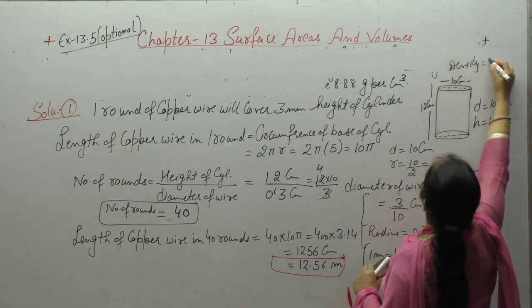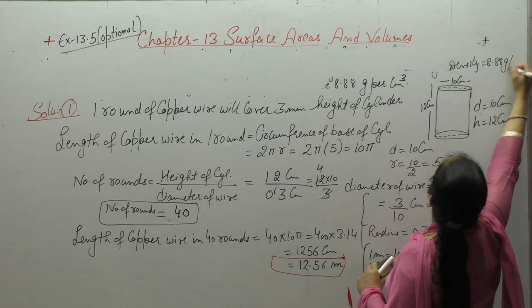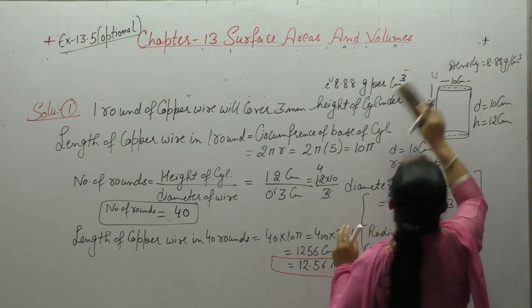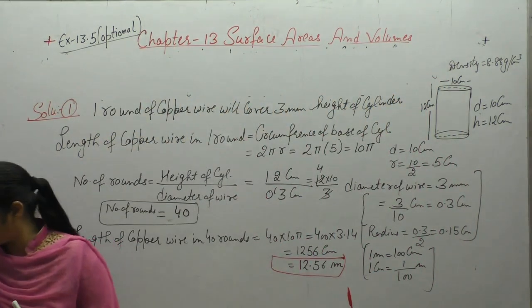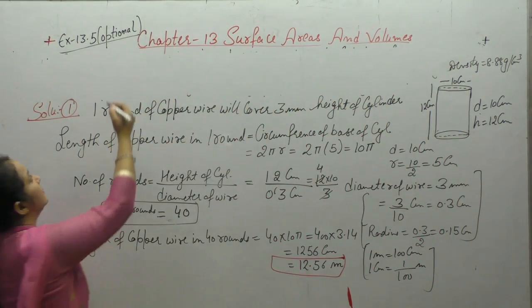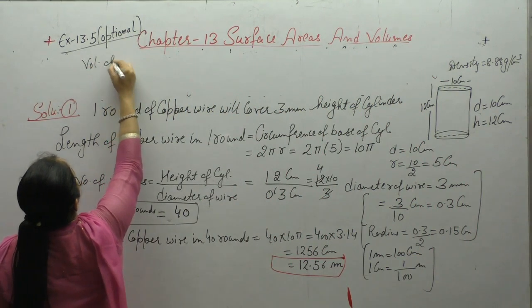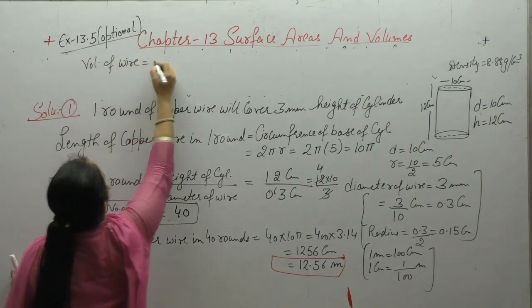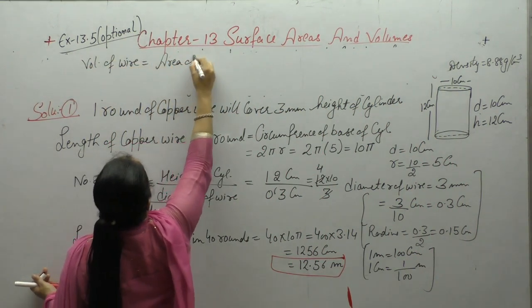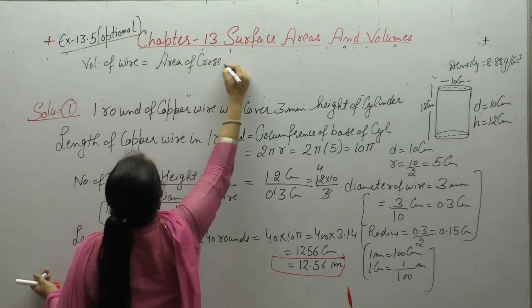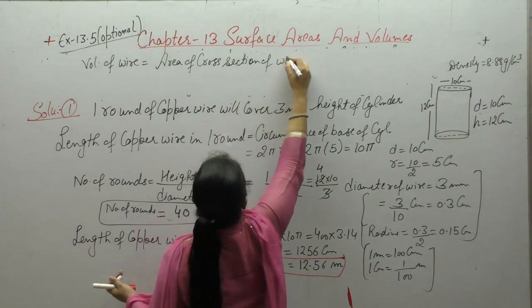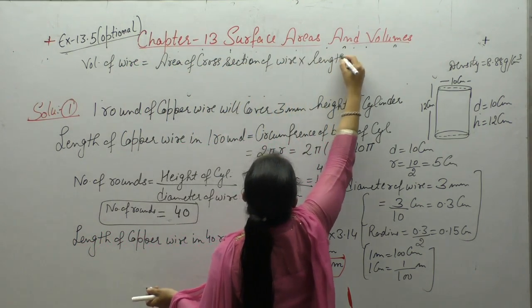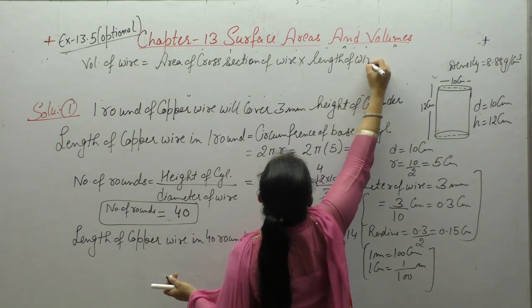Next, we already have the length. Density is 8.88 grams per centimeter cube. So write down: volume of wire is equal to area of cross section of wire into length of wire.